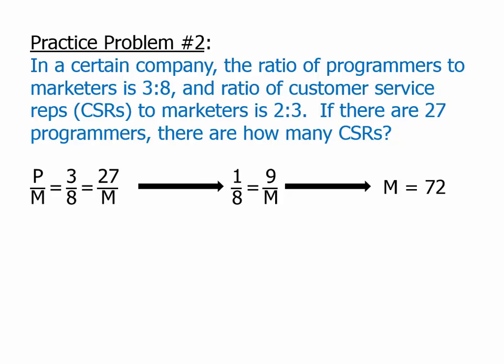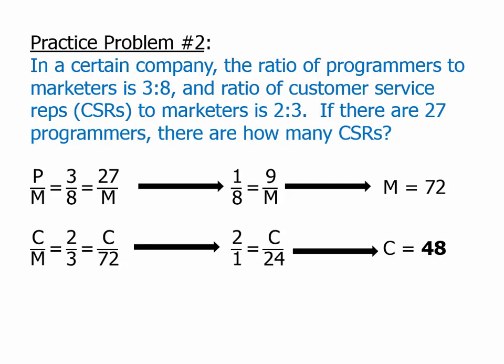Now, we take that number and use it in the other ratio. The ratio of customer service reps to marketers is 2 to 3, and we know marketers is 72. So, C is going to be the number of customer service reps. That's the answer we're looking for. Again, we can cancel. We can cancel now in the denominator by a factor of 3. It simplifies to this, we cross multiply, and we get that there are 48 customer service reps. And so, that's the answer.